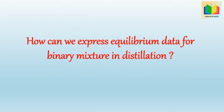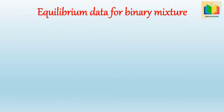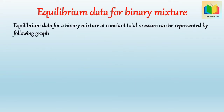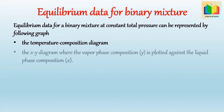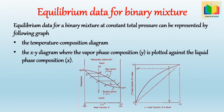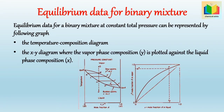How can we express equilibrium data for binary mixture in distillation? Equilibrium data for a binary mixture at constant total pressure are represented in graphical forms by means of the temperature composition diagram and the XY diagram. In the temperature composition diagram, temperature is plotted on the Y axis, and the vapor phase composition of more volatile component (Y, in terms of mole fraction) and the liquid phase composition of more volatile component (X, in terms of mole fraction) are plotted on the X axis.